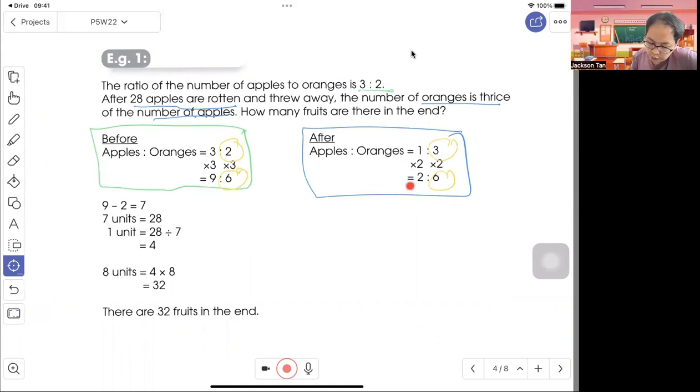When you compare, the 28 apples rotten, 9 minus 2 is 7 units. So 7 units equals 28. 1 unit will be 28 divided by 7, which is 4. And 4 times 8 is 32. They ask for fruit in the end. So there are 32 fruits in the end.